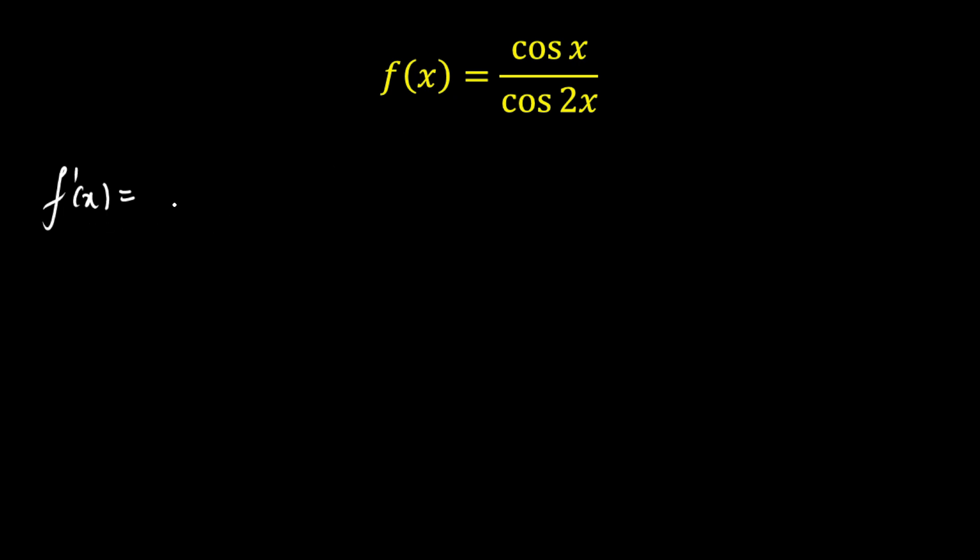First, I am going to calculate f prime of x. I am going to apply quotient rule here. Cos squared 2x, derivative of numerator is minus sin x and denominator as it is. Negative times the derivative of denominator, so that is minus times minus plus 2 sin 2x, and the numerator will come as it is here, cos x.